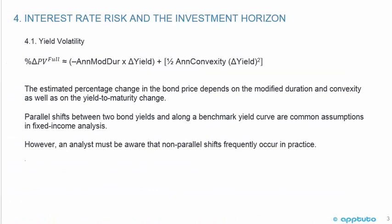The percentage change in the full price equals approximately the negative annual modified duration times the change in yield, plus one-half annual convexity times the change in yield squared. So the estimated percentage change in the bond price depends on the modified duration and convexity as well as on the yield to maturity change. Parallel shifts between two bond yields and along a benchmark yield curve are common assumptions in fixed income analysis; however, an analyst must be aware that non-parallel shifts frequently occur in practice.